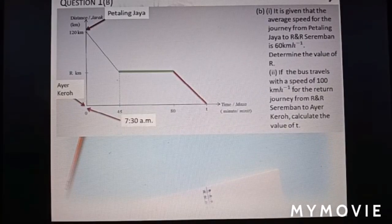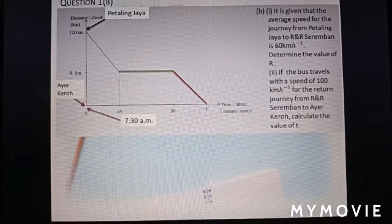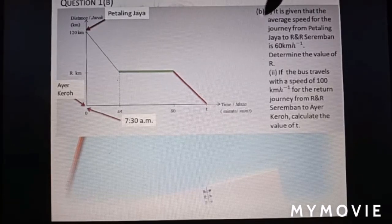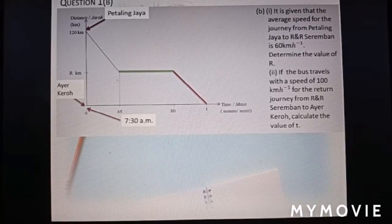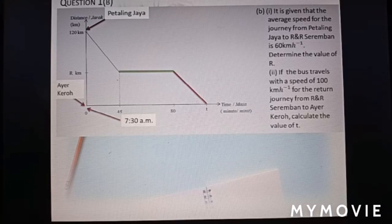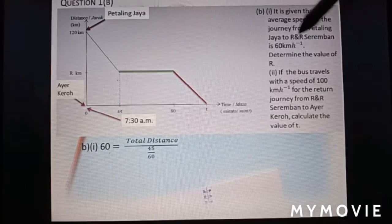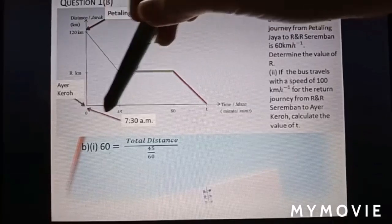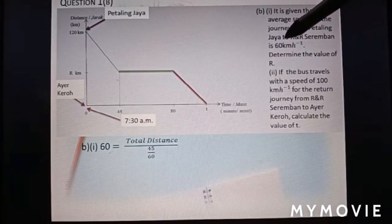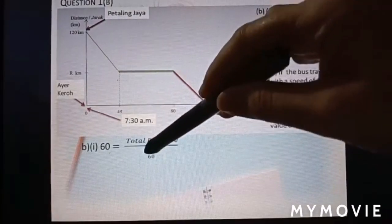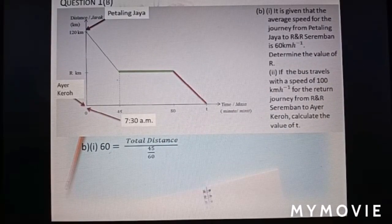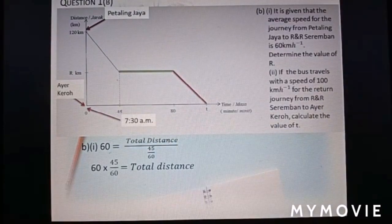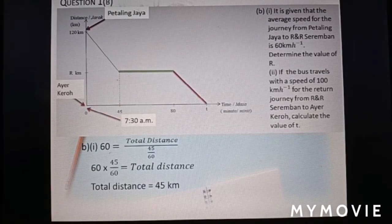Part B. It is given that the average speed for the journey from Petaling Jaya to R&R Seremban is 60 km per hour. Determine the value of R. Okay, if given average speed equal to 60 km per hour, so you need to use the formula: average speed equals total distance over total time. We fill in only average speed, 60, equal to total distance over total time from here to here is 45 minutes. But because the unit here is km per hour, so minutes must change to hour. 45 divided by 60.